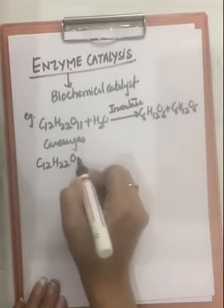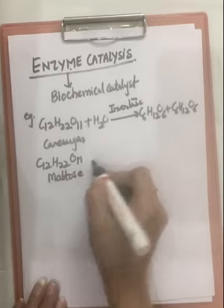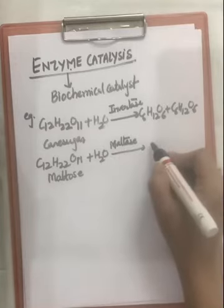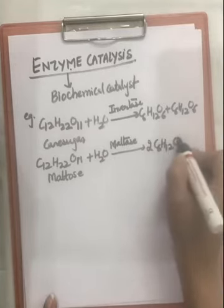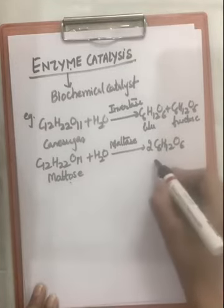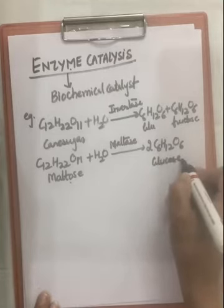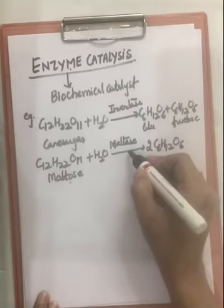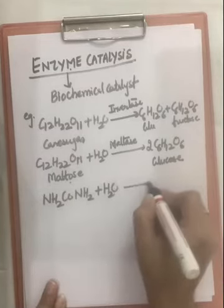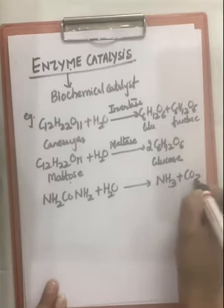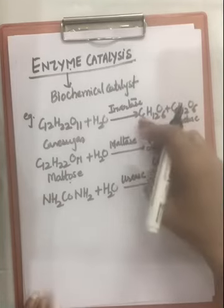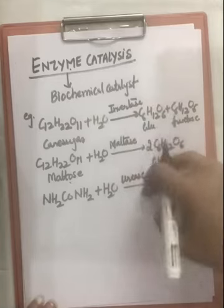Maltose has the same formula. When maltose hydrolyzes in the presence of enzyme maltase, two molecules of glucose are formed — here we have glucose and fructose from cane sugar, but in the case of maltose, two molecules of glucose only are formed, because the enzyme is different. If we take urea and it hydrolyzes to give ammonia and carbon dioxide, the enzyme required for this reaction is urease.